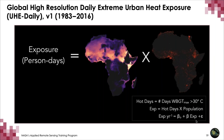To measure exposure, we use an established metric called person-days. This metric takes the number of hot, humid days in a given year and multiplies it by the population exposed. We can do this for any geography. For example, if there are 10 million people in New York City and in 2016 there were two dangerous hot, humid days, there would be 20 million person-days for 2016 for New York City. We can then look at how person-days has changed through time and fit a trend line.